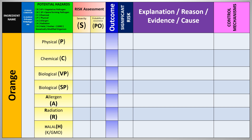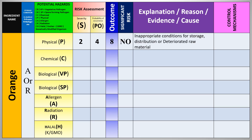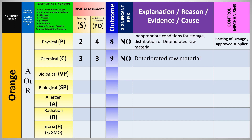For orange stored at ambient temperature: physical hazard severity 2 × probability 4 = outcome 8 — not significant. The cause is inappropriate storage and distribution conditions or deteriorated raw materials. Control measures are sorting at receiving and approved supplier per the food safety management system. Chemical hazard: severity 3 × probability 3 = 9 — not significant, due to deteriorated raw material. Control: washing or approved supplier.